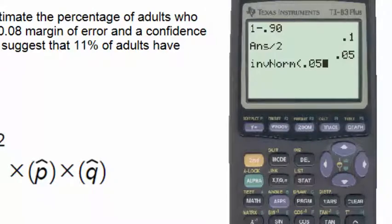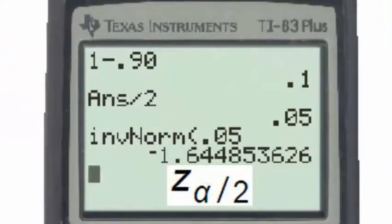Into which we'll put 0.05, and we see that z subscript alpha divided by 2, which is the critical value, a z-score, is given as negative 1.64. However, we will take the critical value to be positive as an answer, and we'll round it to two decimal places.